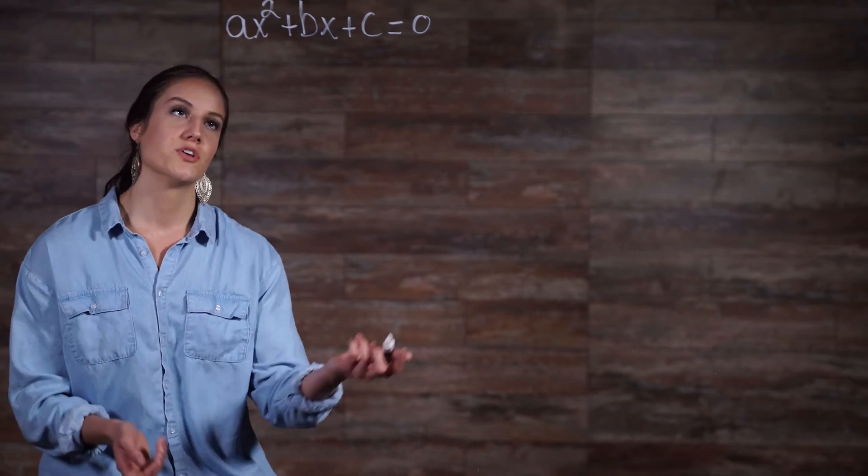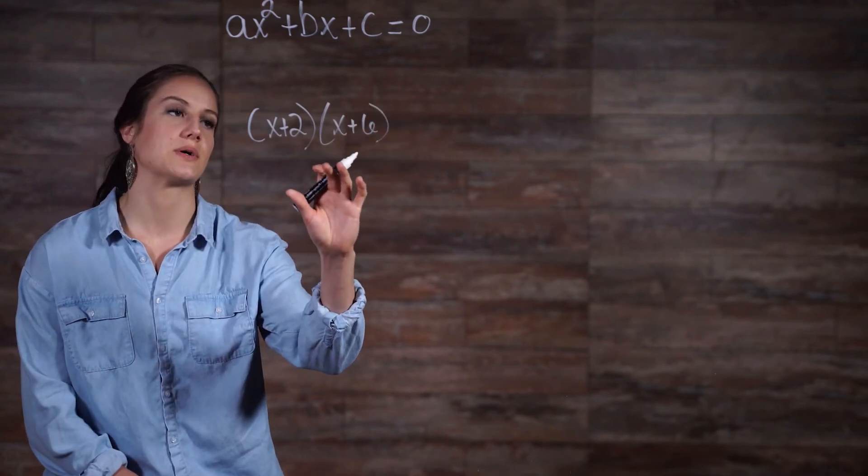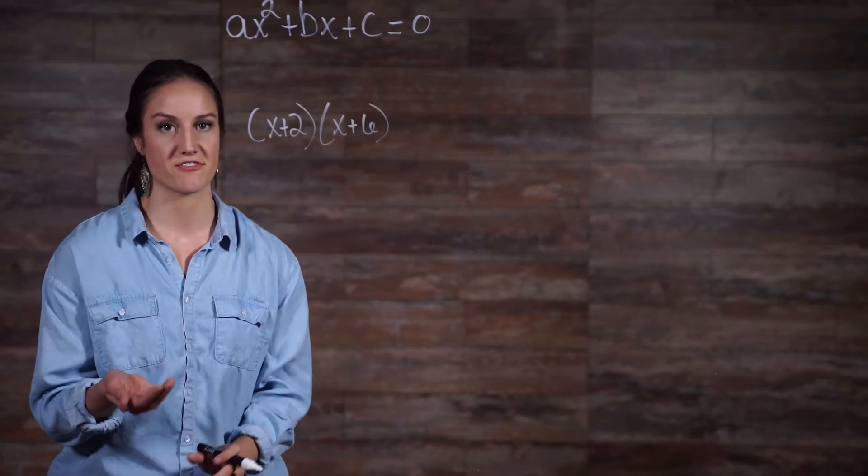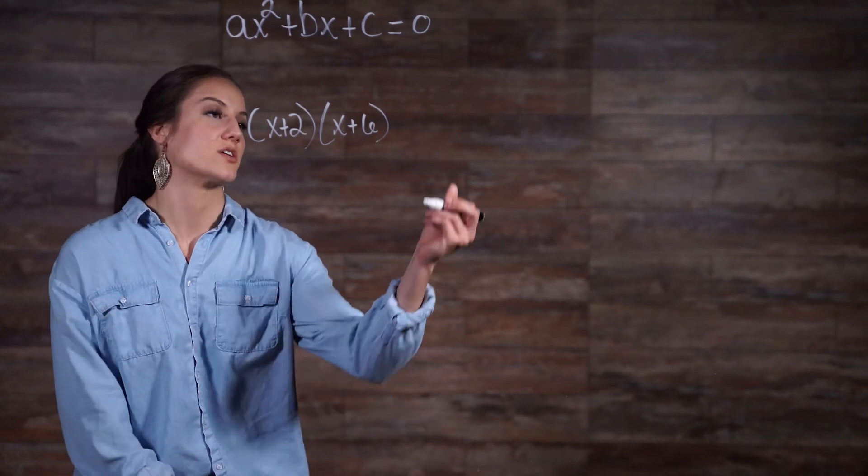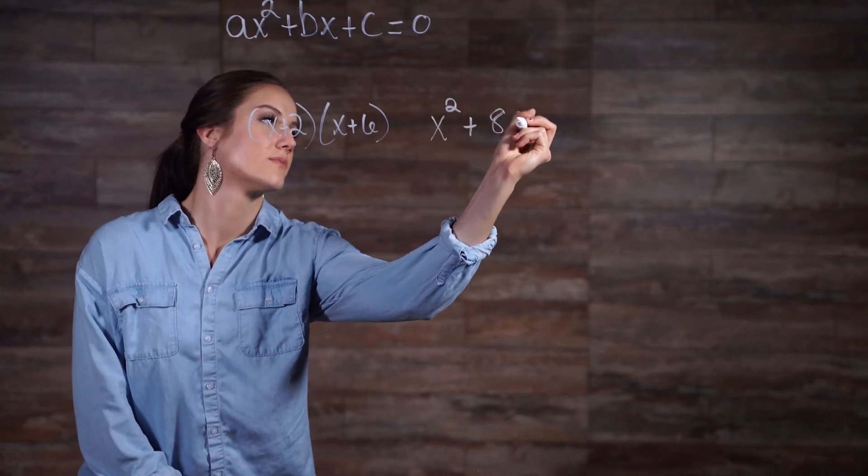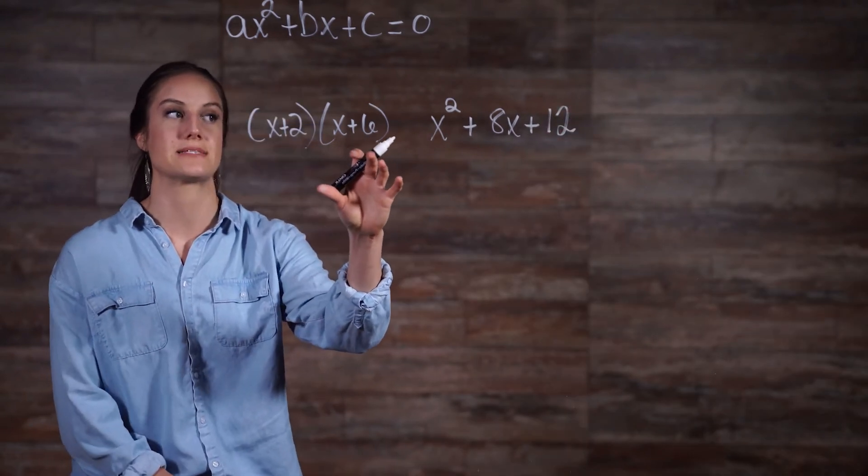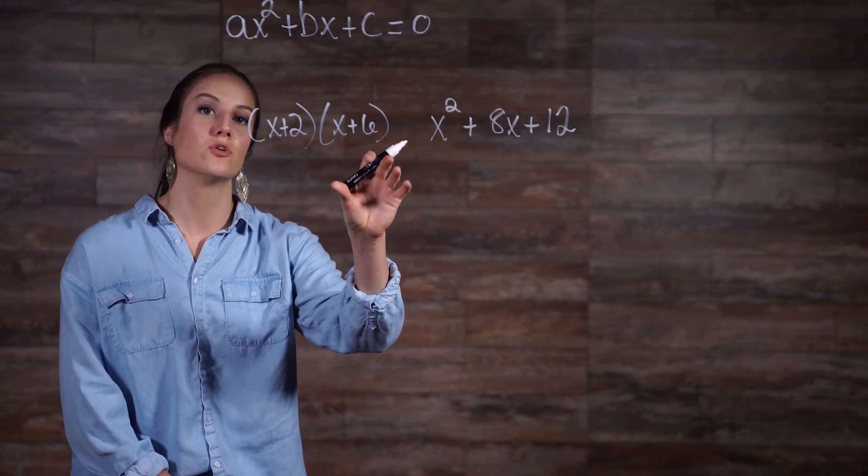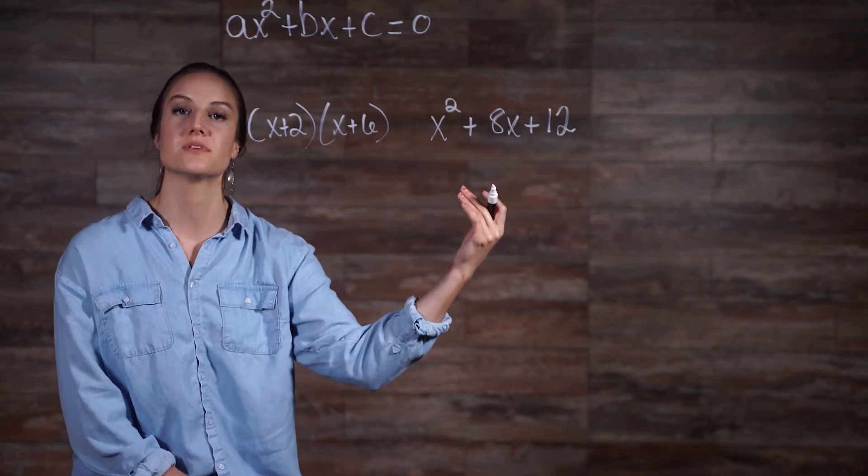For example, you have your factors x plus 2 and x plus 6 that are being multiplied together. Once you multiply together, you get x squared plus 8x plus 12. So again, we have our factors x plus 2 times x plus 6 on the left, and when you multiply that, you get the expanded version x squared plus 8x plus 12.